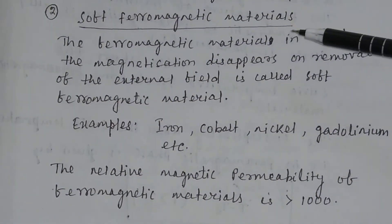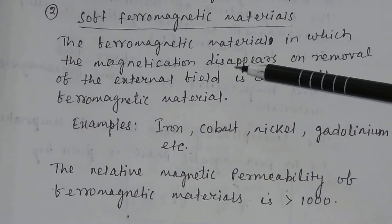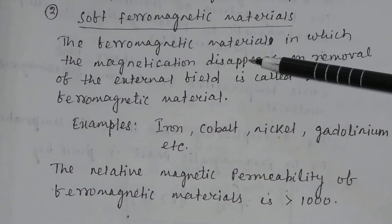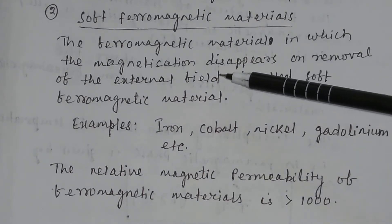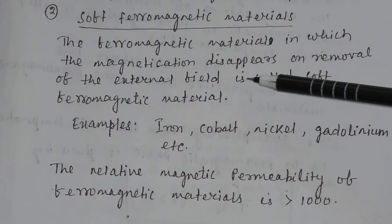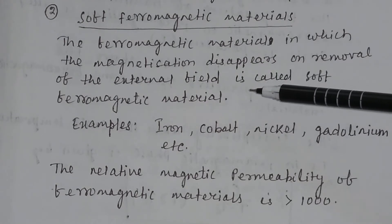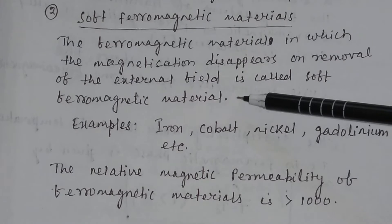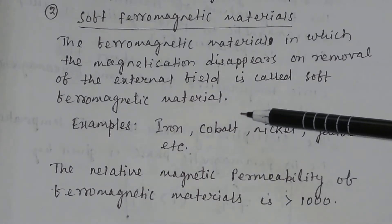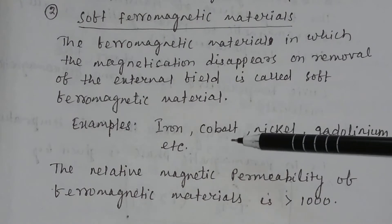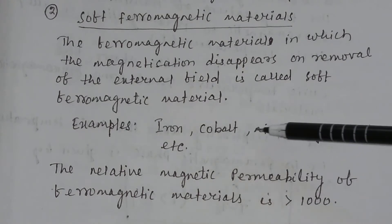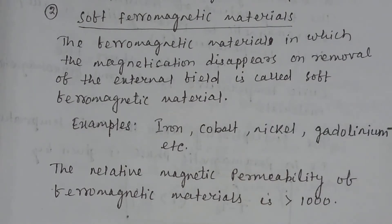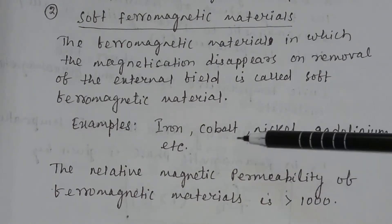Soft Ferromagnetic Materials. The ferromagnetic material in which the magnetization disappears on removal of the external magnetic field is called soft ferromagnetic material. Examples of soft ferromagnetic materials are iron, cobalt, nickel, gadolinium, etc.